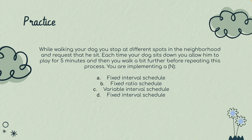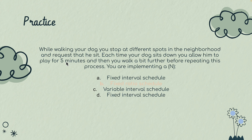'While walking your dog, you stop at different spots in the neighborhood and request that he sit. Each time your dog sits down, you allow him to play for five minutes, and then you walk a bit further before repeating this process.' The answer is fixed ratio. The key part: 'each time your dog sits, you allow him to play for five minutes.' The playing for five minutes is just the duration of reinforcement — that's not when you're delivering the reinforcement; it's how long they can contact reinforcement. You deliver reinforcement every time they sit. Realistically, it's an FR1, or a continuous reinforcement schedule.